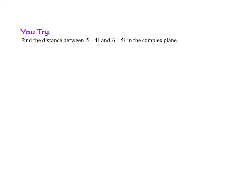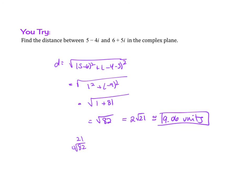So try this example. Find the distance between 5 minus 4i and 6 plus 5i in the complex plane. If you tried this out, you would find that the distance is the square root of 82, or 2 root 21, or approximately 9.06 units.